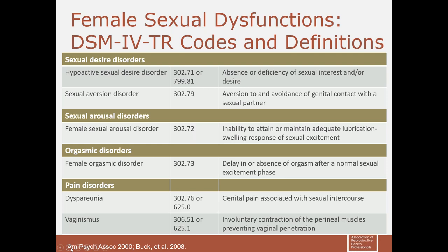It is important to understand the timeframe in which women experience these issues. We categorize them as lifelong — present since the onset of sexual functioning — or acquired, where functioning was previously normal. We also distinguish situational — occurring only in certain situations, with certain stimulation, or with particular partners — versus generalized. So we use the dimensions of lifelong versus acquired and situational versus generalized.